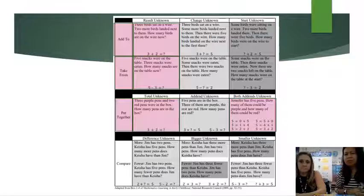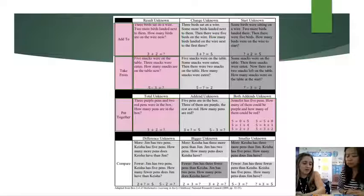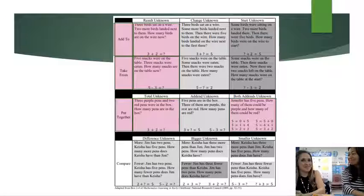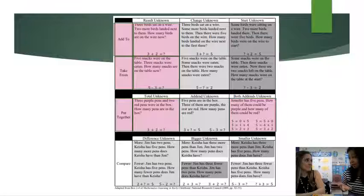Okay. So what did you notice in the chart that's different with the both addends unknown? So I noticed right away all of the equations, which makes me think, how are we going to get our kindergarten students comfortable with this type of problem? Yeah. This is definitely the first time that they'll have more than one answer in a problem.